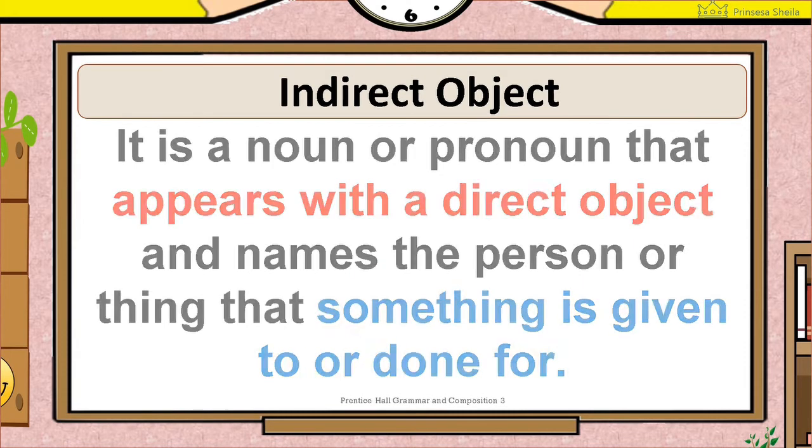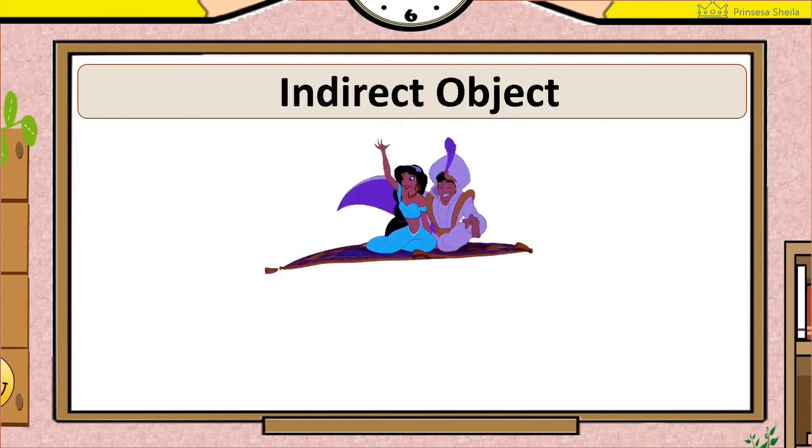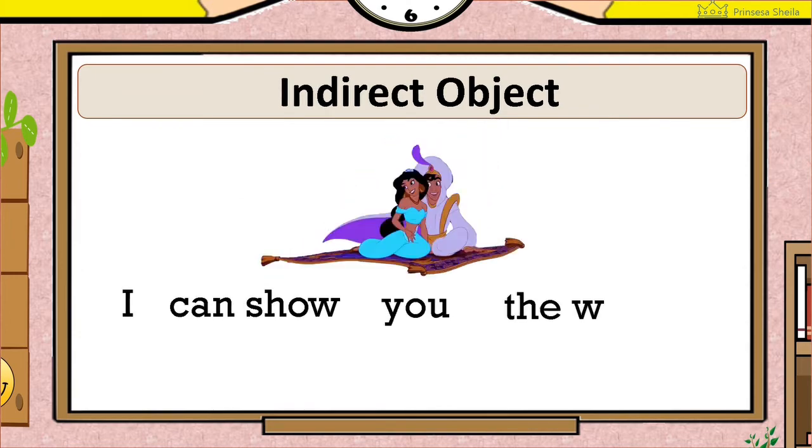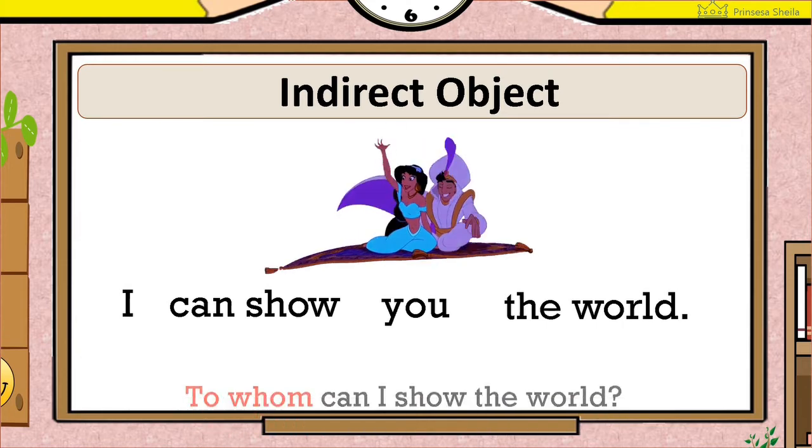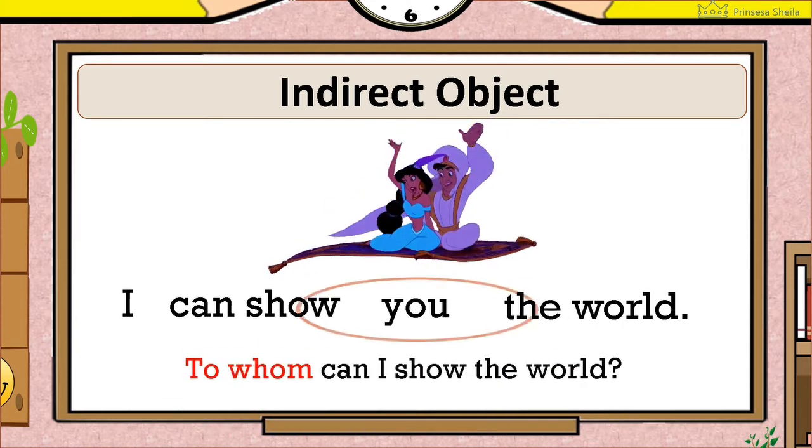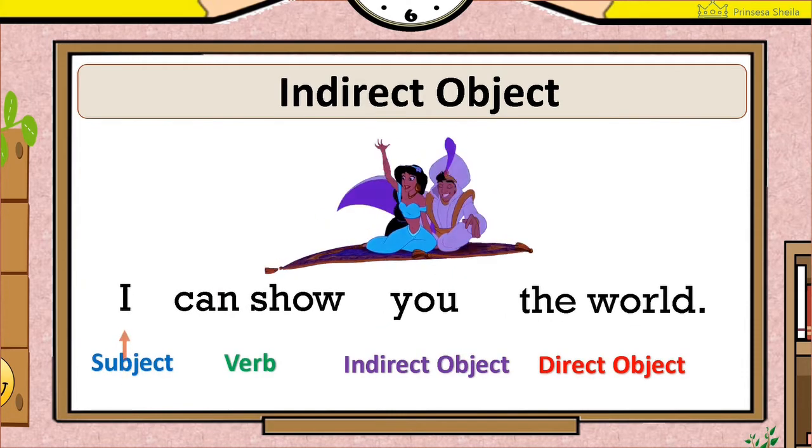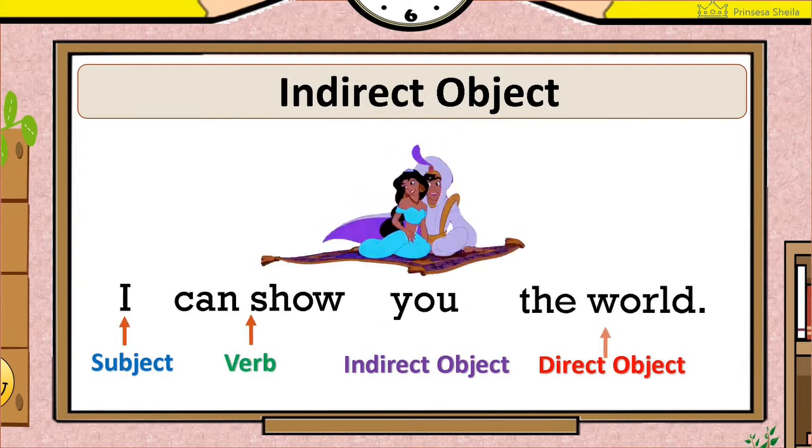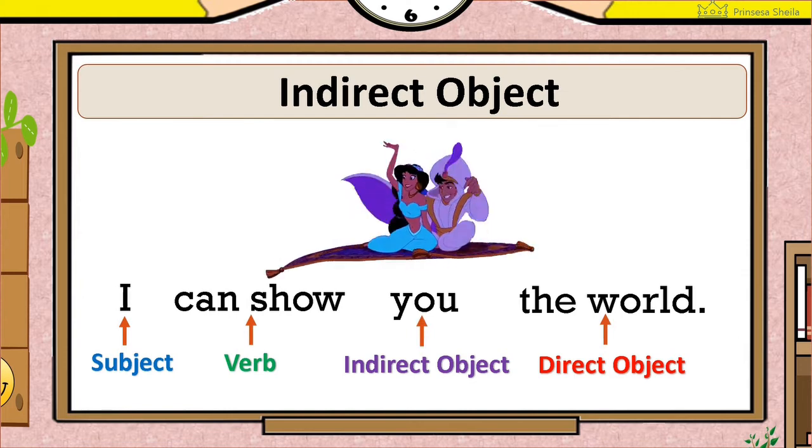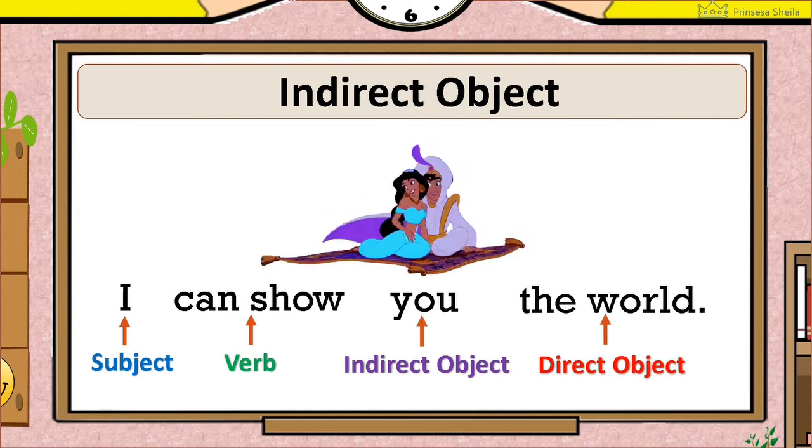For an example, I can show you the world. To whom can I show the world? To you. So you here is the person being done for. You is the beneficiary of the action showing the world. So you is the indirect object.